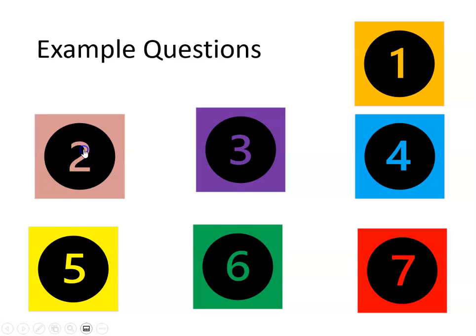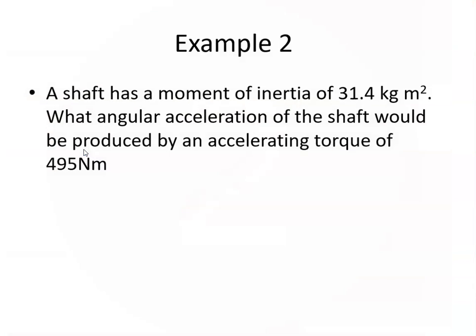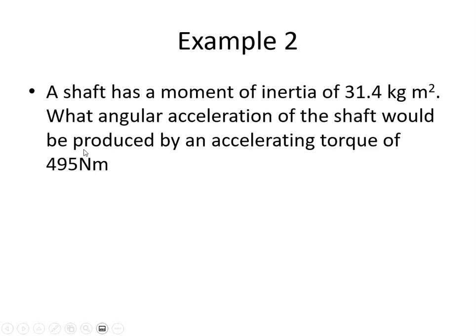Example 2. A shaft has a moment of inertia of 31.4 kilogram meters squared. What angular acceleration of the shaft will be produced by an accelerating torque of 495 Newton meters?